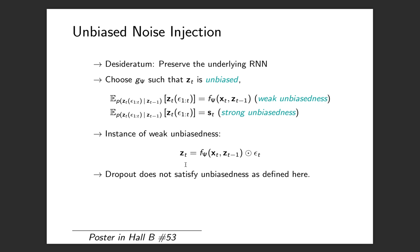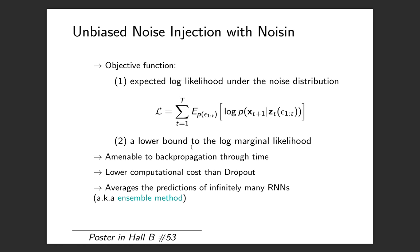In the sense we define unbiasedness, dropout appears to be biased. Dropout does not satisfy weak unbiasedness or strong unbiasedness. So we can think of dropout actually as a new class of recurrent models. That's what we will do in our experiments. I will show results on when we compare NOISIN with dropout and have better performance than just using dropout.